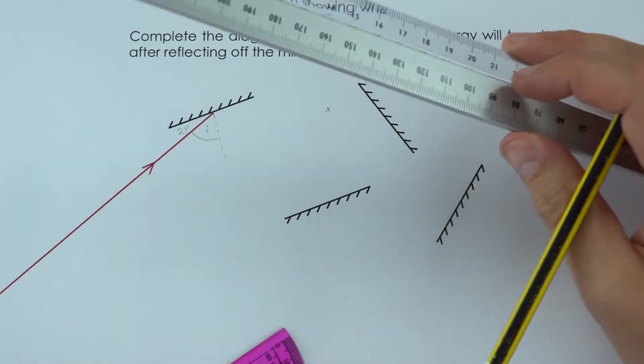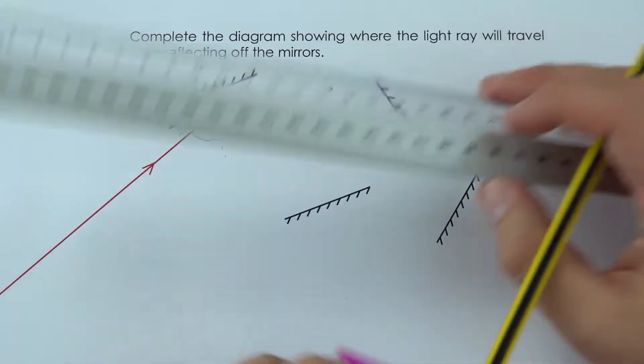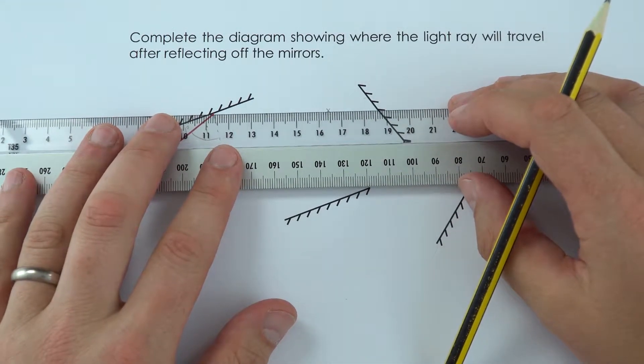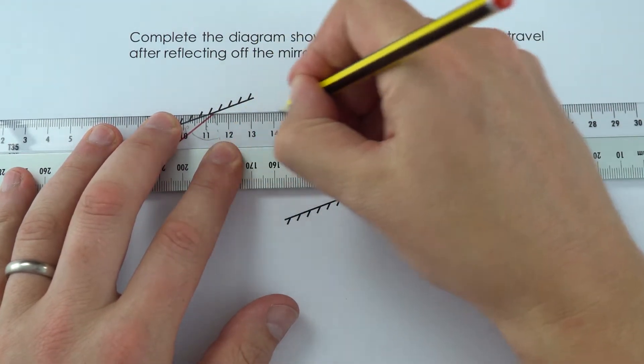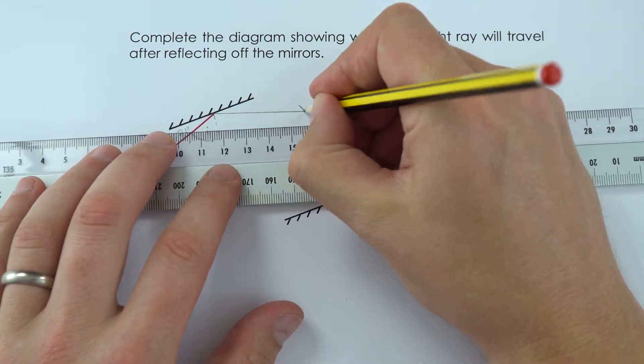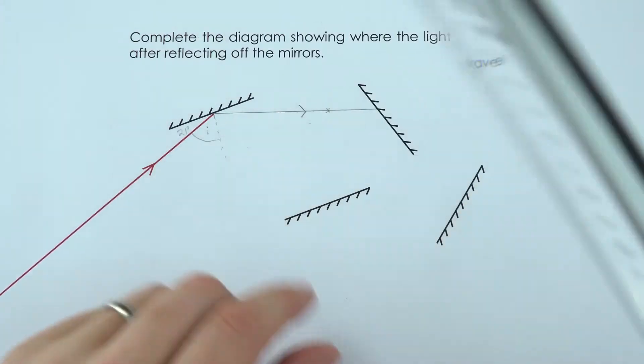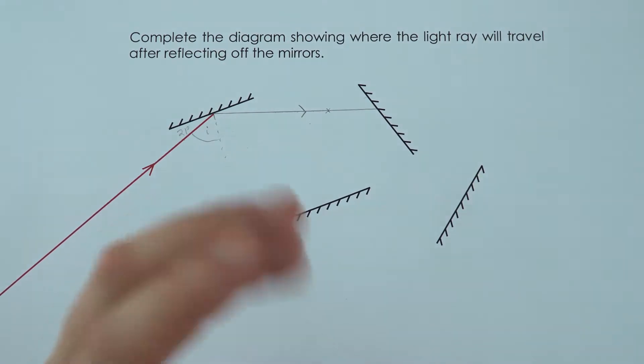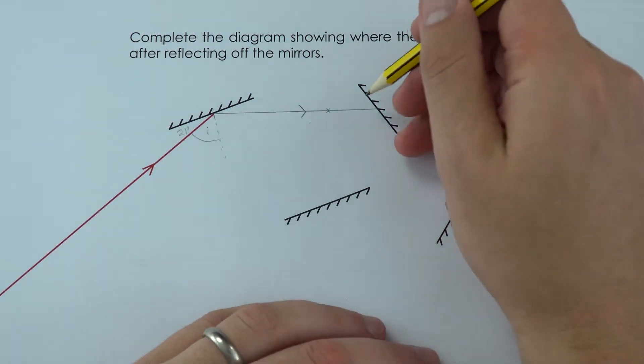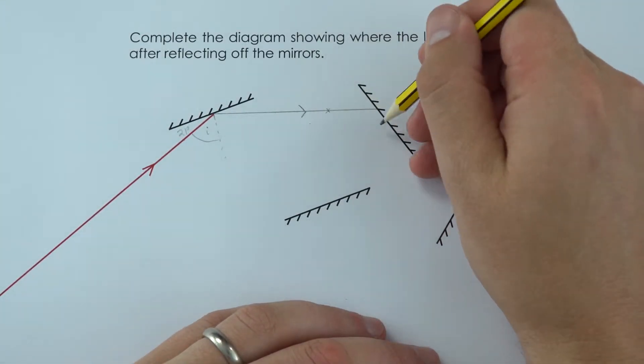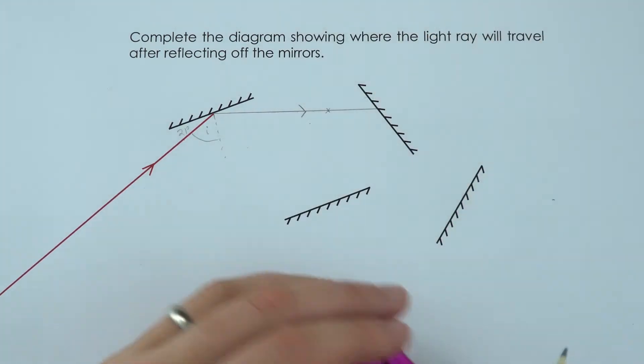I can then get my ruler or I could I suppose use the side of the protractor just to be a straight edge and I then just connect up the two like that. I put an arrow to show which way that ray of light has reflected and then I'm going to do exactly the same and just work out this angle here, measure it on here, and then draw in the ray of light like so.